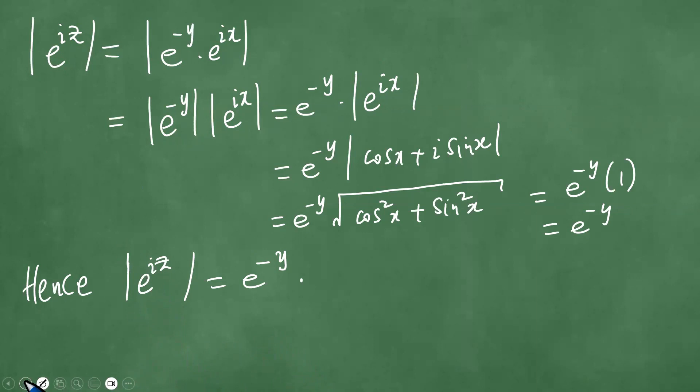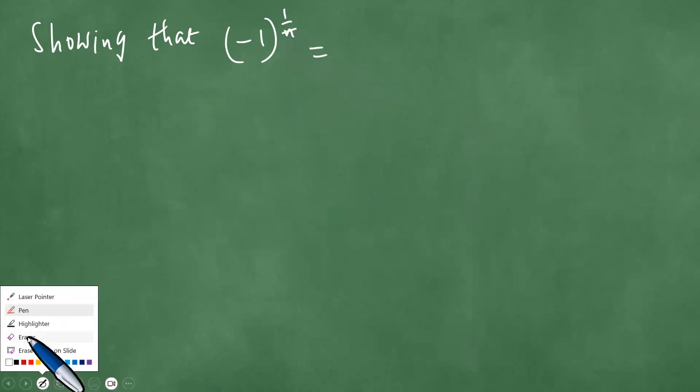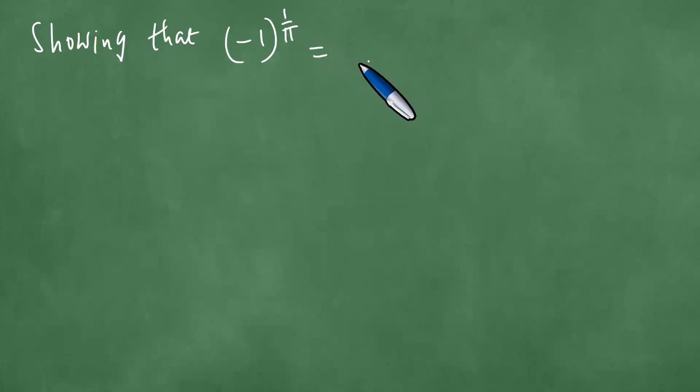Next. Right, we proceed to note that we shall be showing that minus 1 to the power 1 over pi equals e to the power 2n plus 1 times i. Okay, 1 over pi like so, is e to the power 2n plus 1 times i. We're showing these, showing that this is the case.